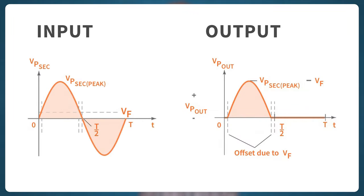Also, if you compare the graph of the input and output, you'll notice an offset and the peak value of the output voltage is 0.7 volts less than the peak value of the input voltage, if the diode is silicon.